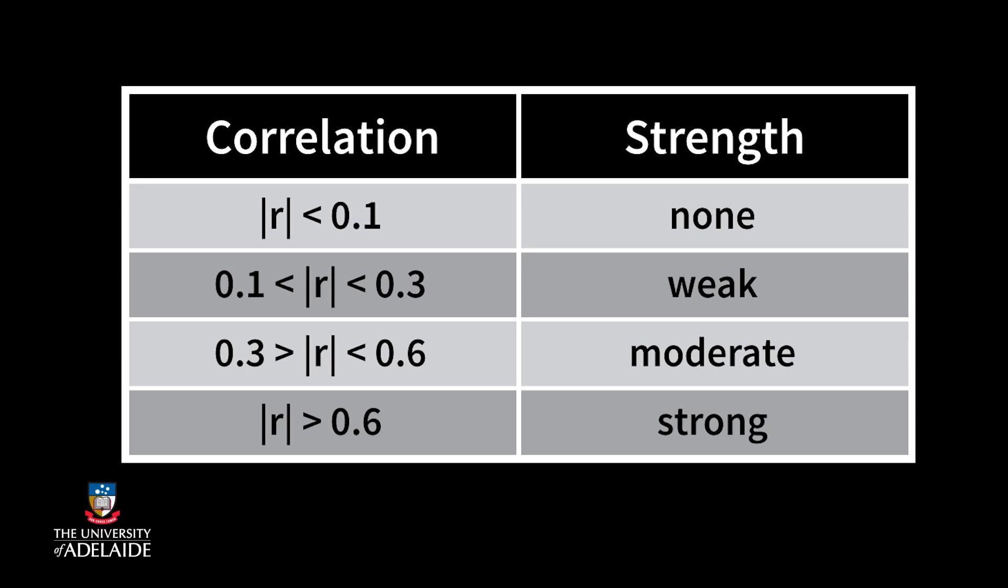There's no strict definition of the boundaries between weak, moderate, and strong relationships, but roughly, we generally think of correlations with magnitudes between 0.1 and 0.3 as being weak, between 0.3 and 0.6 as being moderate, and greater than 0.6 as being strong.